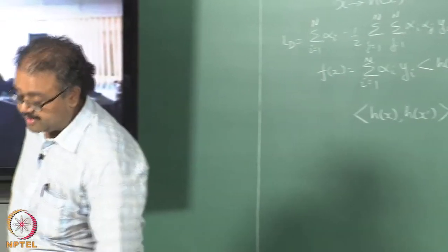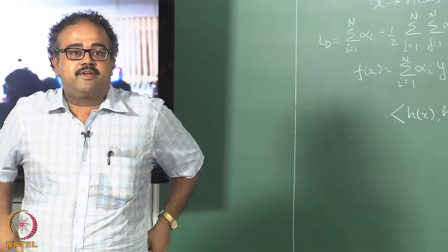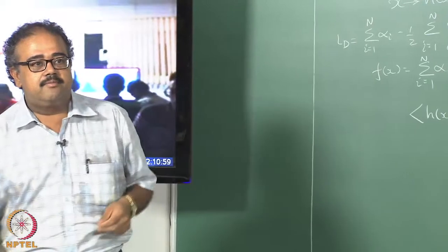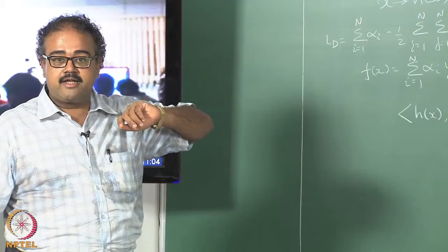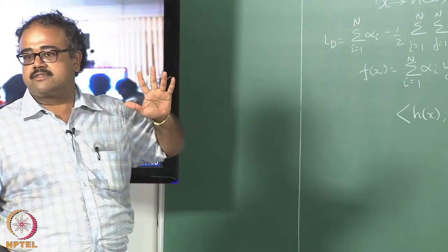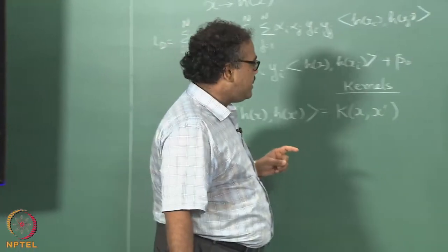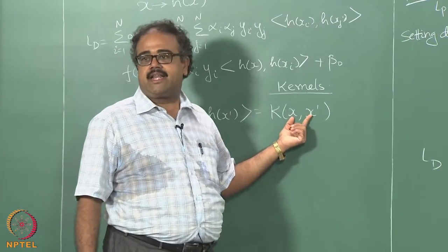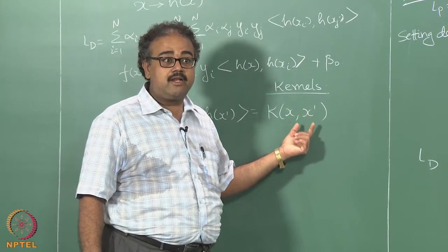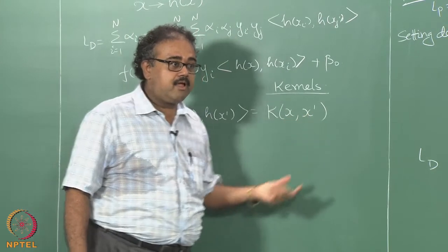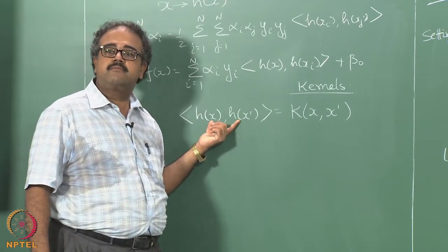Such similarity measures are also called kernels. You might have heard of kernels in the context of support vector machines — if you have been trying to use libSVM or any of the other tools for some projects over the summer, you would have heard of kernels. Kernels are nothing but similarity functions. The nice thing about the kernels that we use is that they actually operate on X and X prime, but they are computing the inner product of H of X and H of X prime.